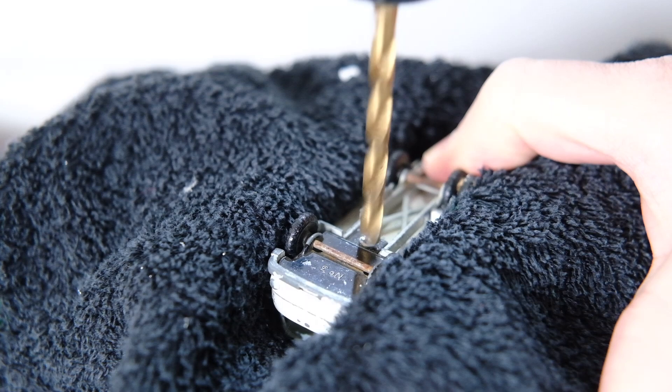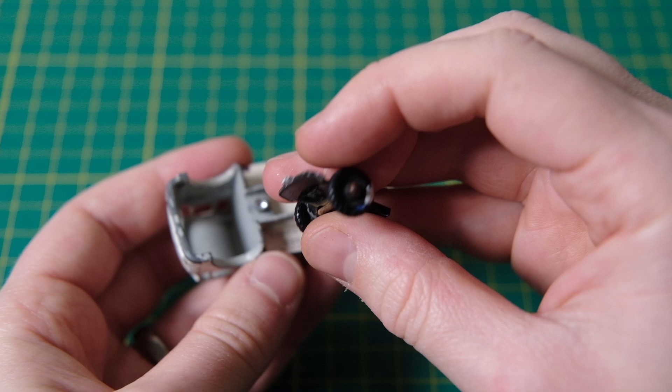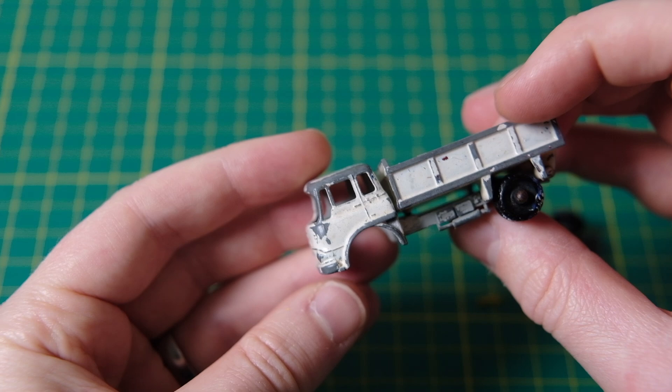The Bedford TK launched in 1960 as a replacement for their S-Type model which had been in production since 1950. As well as tippers, the chassis was used for fire engines, flatbeds, horse boxes and were used in the military.